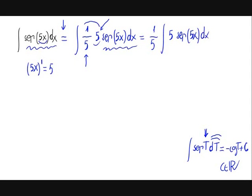The sinus of a function times the derivative of the function. Using the formula, we write 1 fifth times the integral of the sinus. So, the minus cosine of the function, 5x, plus c out of the parentheses.